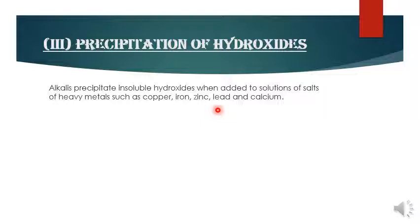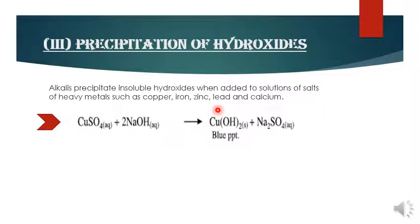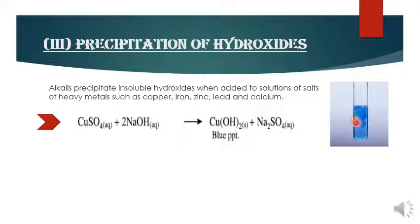First equation: when you have copper sulfate (CuSO4) and react it with sodium hydroxide (NaOH, an alkali), you get copper hydroxide and Na2SO4. The copper hydroxide precipitate is blue. In the test tube, when you pour sodium hydroxide down onto the copper sulfate solution, at the point where the two meet you will see blue precipitates of copper hydroxide forming. These are not soluble — clear?